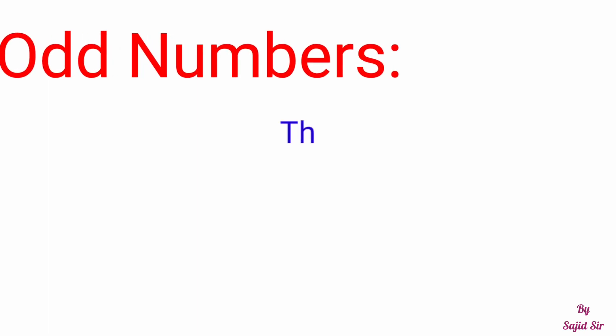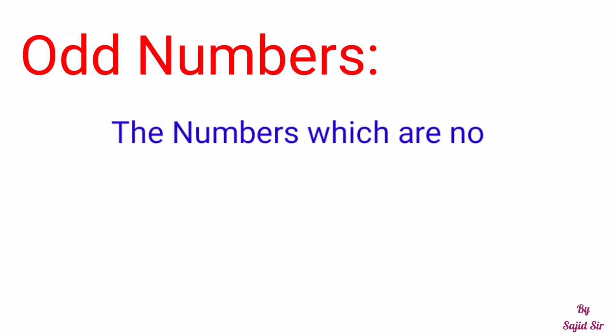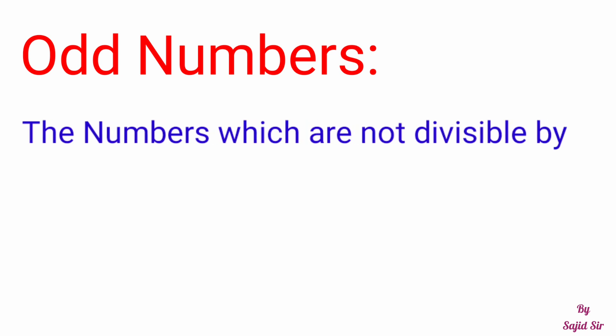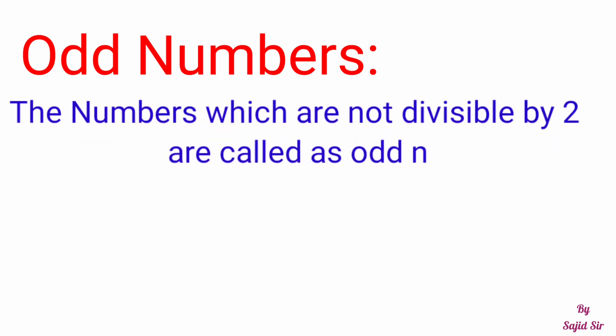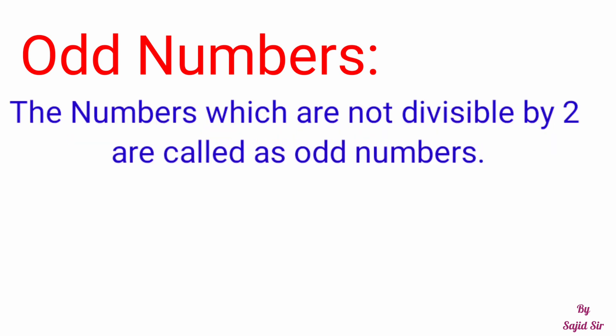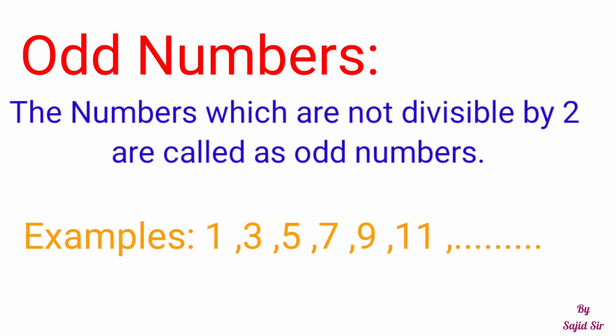Odd Numbers: The numbers which are not divisible by 2 are called Odd Numbers. ऐसे Numbers जो 2 से divisible नहीं हैं या 2 के टेबल में नहीं आते हैं, ऐसे Numbers को हम Odd Numbers कहते हैं। For example, 1, 3, 5, 7, 9, etc. are Odd Numbers.